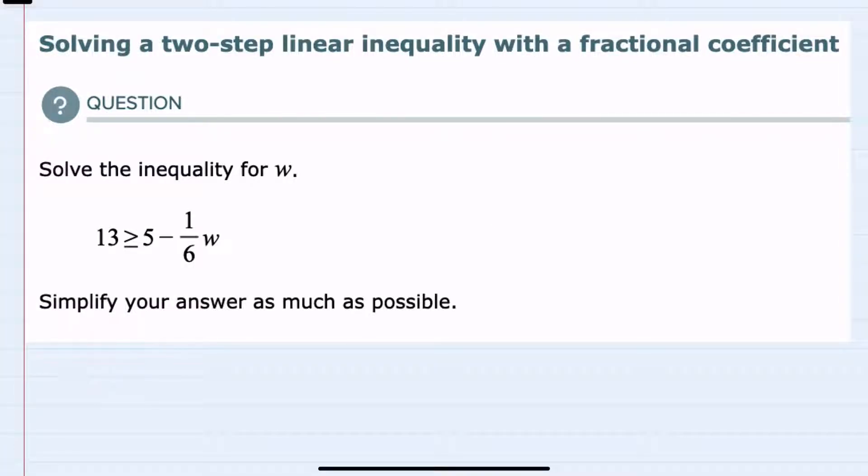In this video I'll be helping you with the ALEKS problem type called solving a two-step linear inequality with a fractional coefficient. We're asked to solve the inequality for w, so we'll need to isolate the w on one side of the inequality.